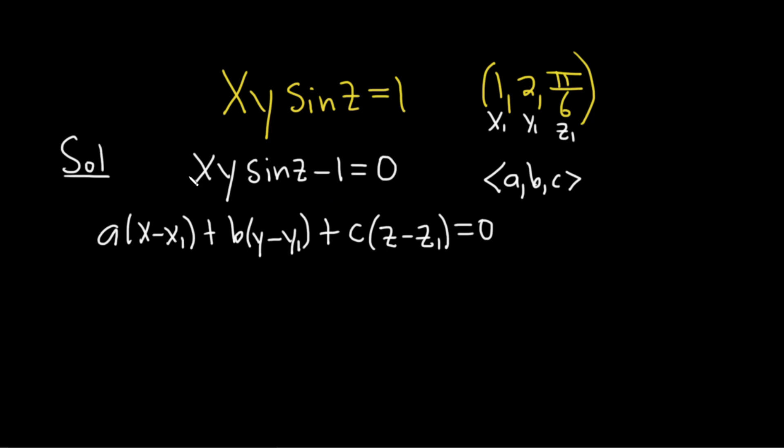So for the tangent plane, if you call this piece here big F, and you find the gradient of big F, the gradient of big F at this point is going to be our normal vector. So let's compute the gradient of big F at x, y, z. And then we'll plug in the point and that will be our normal vector and then we'll use the formula.